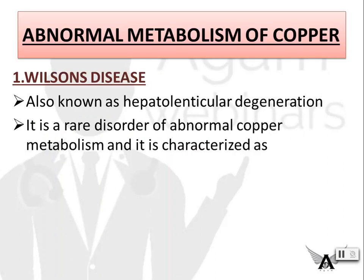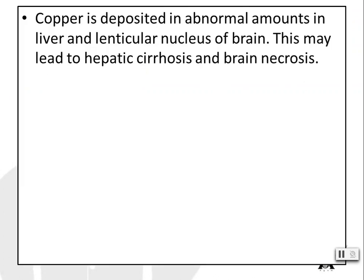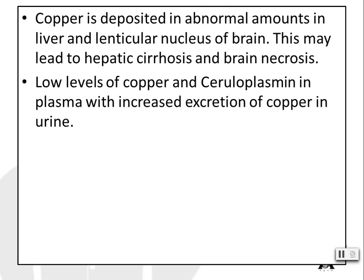Abnormal metabolism of copper — first is Wilson's disease, also known as hepatolenticular degeneration. It is a rare disorder of abnormal copper metabolism that affects the liver and also the brain. It is characterized by copper being deposited in abnormal amounts in the liver and lenticular nucleus of the brain, which may lead to hepatic cirrhosis and brain necrosis. Low levels of copper and ceruloplasmin are found in plasma.